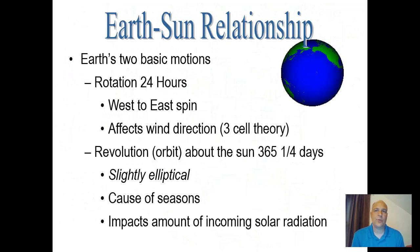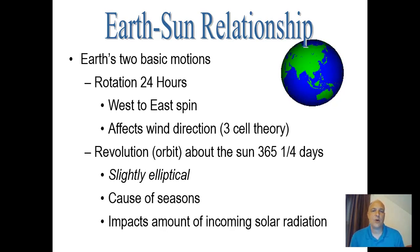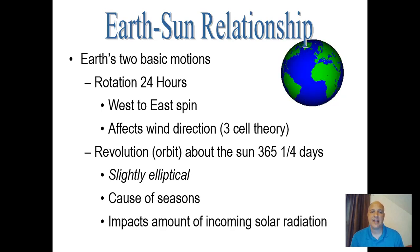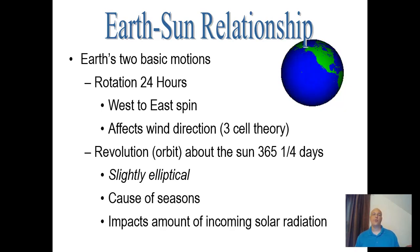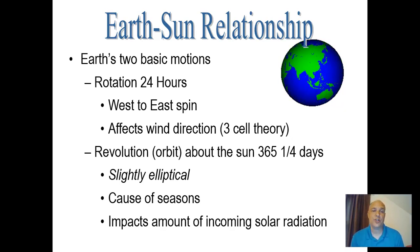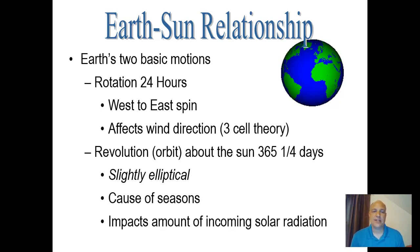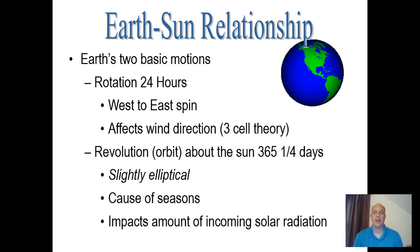The Earth-Sun relationship is very important. Earth has two basic motions: rotation every 24 hours, which causes day and night and affects wind direction; and revolution, or orbit, around the Sun over 365.25 days. The orbit is slightly elliptical and, combined with Earth's 23.5-degree axial tilt, causes our seasons and impacts the amount of incoming solar radiation.